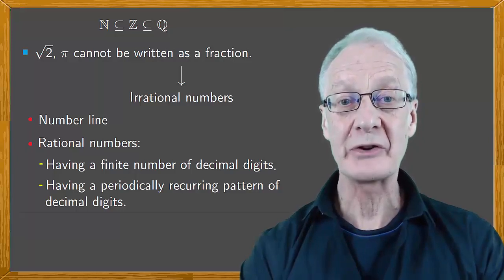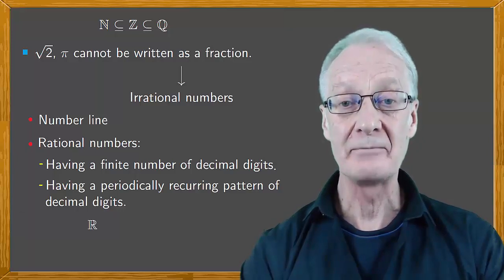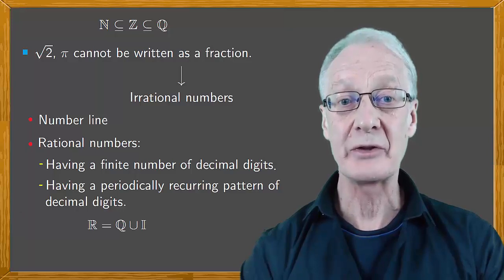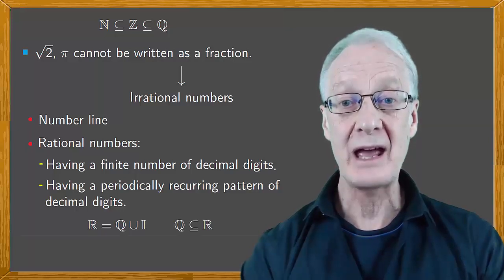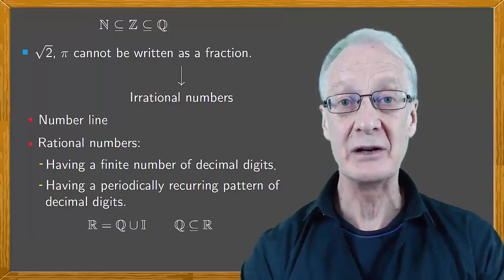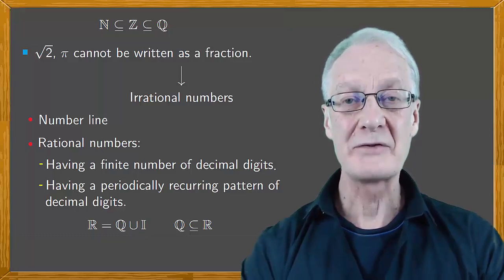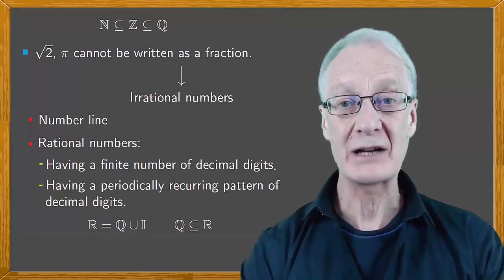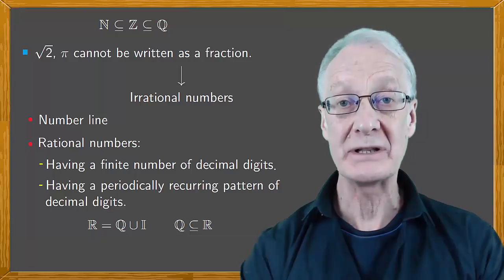If we denote the set of real numbers by R, then R contains both the rational numbers Q and the irrationals, which we can denote by I. We've said that both root 2 and pi are irrational. A bit later, though, we'll see that they have different properties, which means they're not the same kind of irrational number.